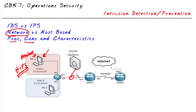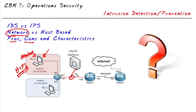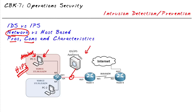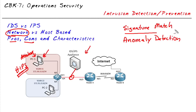I remember in the movie The Wizard of Oz there was a question: are you a good witch or a bad witch? An IPS/IDS device has that same question to ask: are you a good packet or are you a bad packet? How does it know? The two major camps for identifying whether a packet is good or bad — bad meaning malicious — are through a signature match or by using some type of anomaly detection.